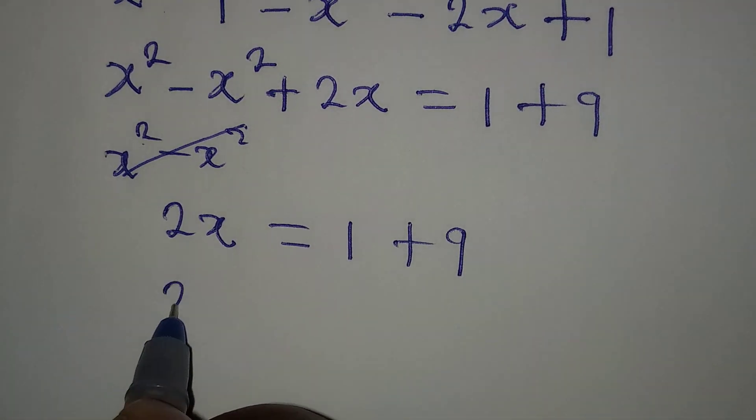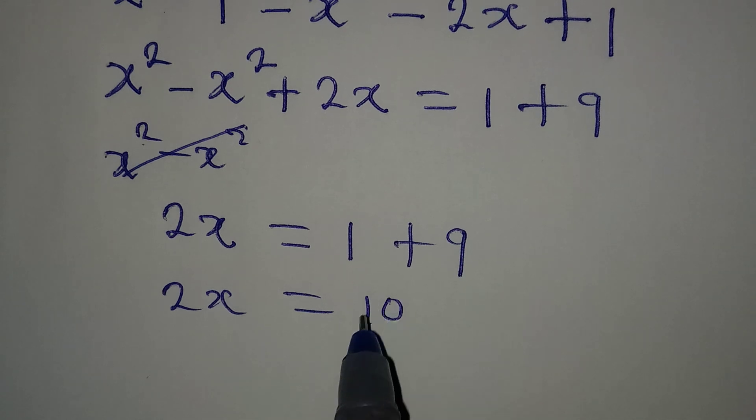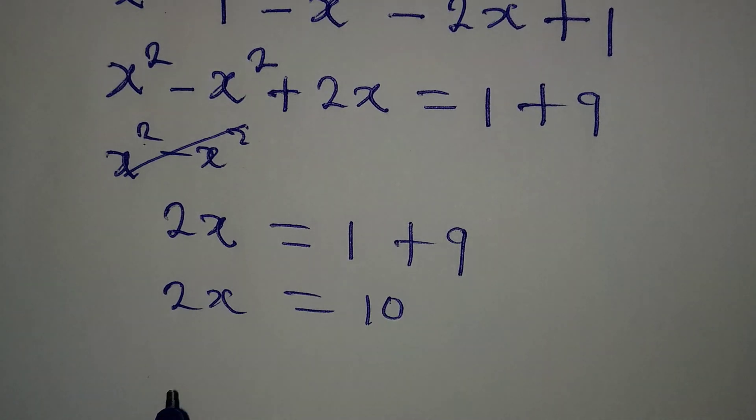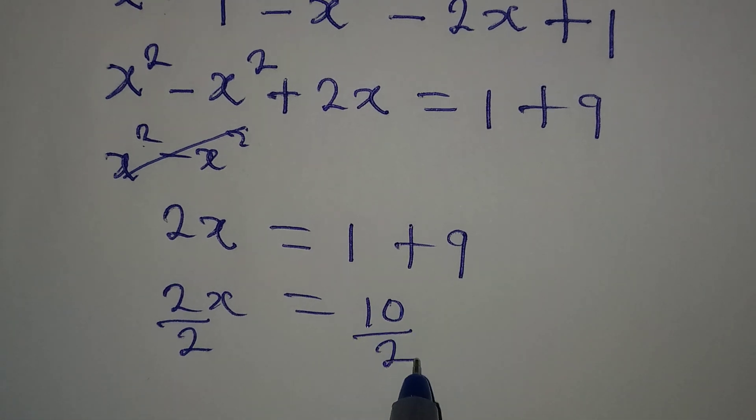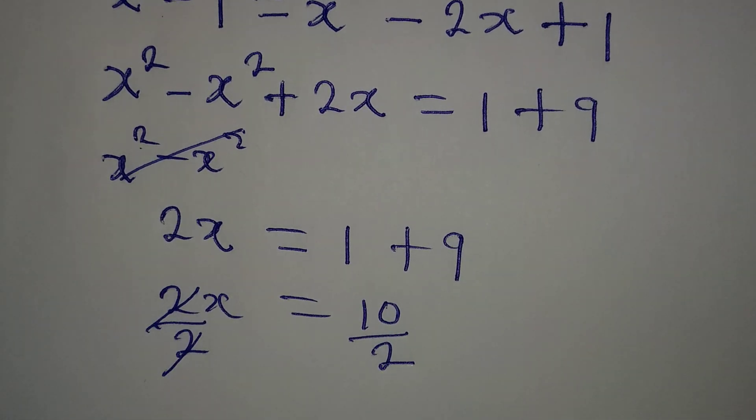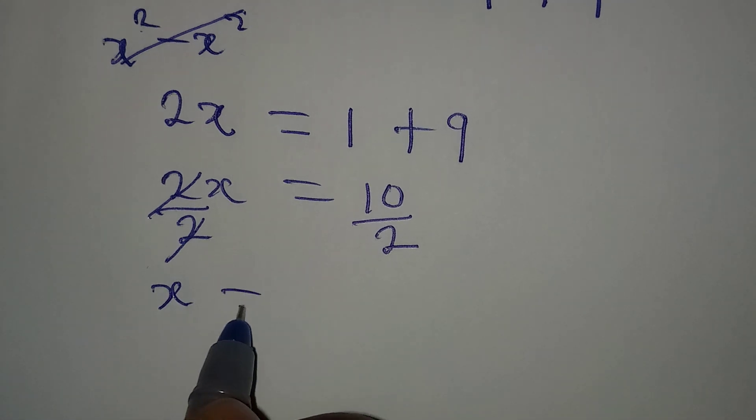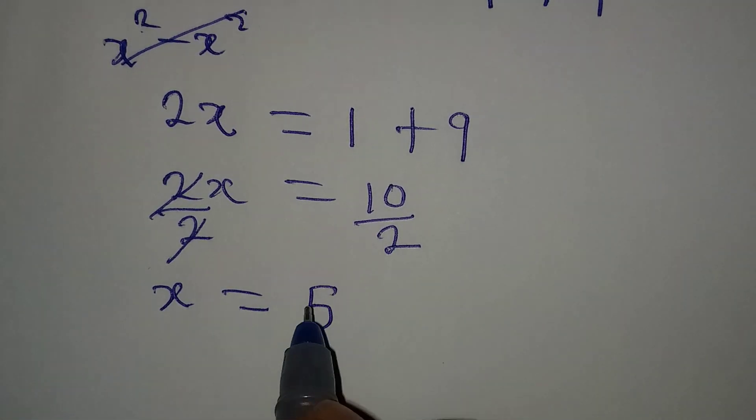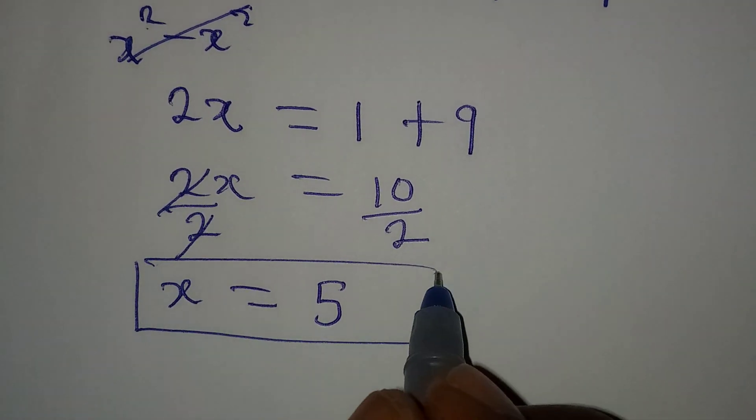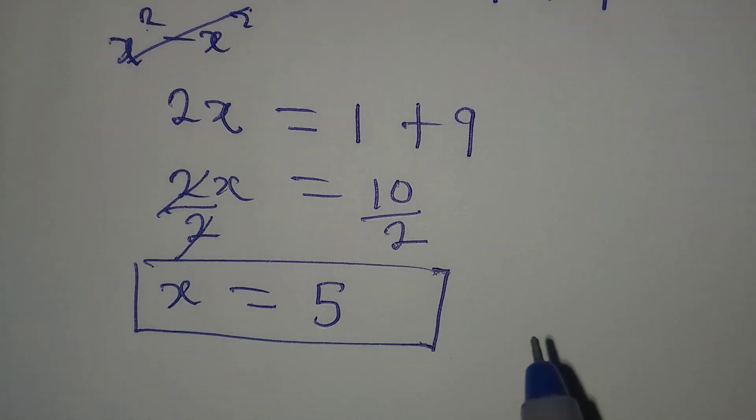And then if we continue, 2x is equal to 10. We can divide both sides by the coefficient of x, 2. So this will go with this. And then x is equal to 10 over 2. And 10 over 2 is 5. So this is the value of x that will satisfy the equation.